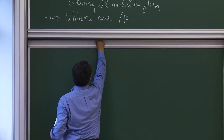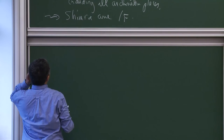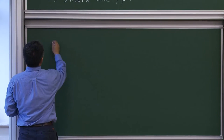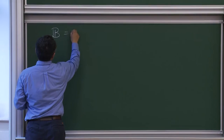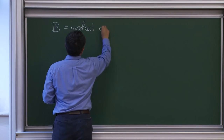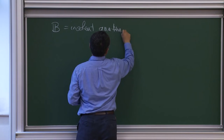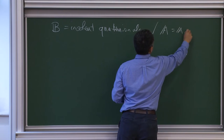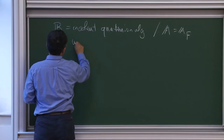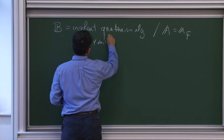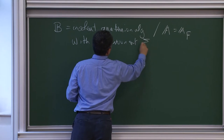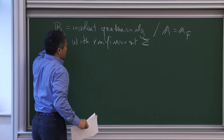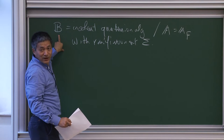The formal definition is not really important, but here it is: B is the incoherent quaternion algebra over the adeles A_F, incoherent with ramification set sigma. Incoherent means that this will never come from a quaternion algebra over F.